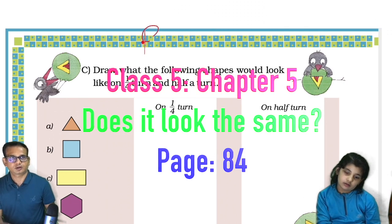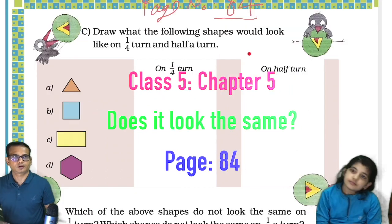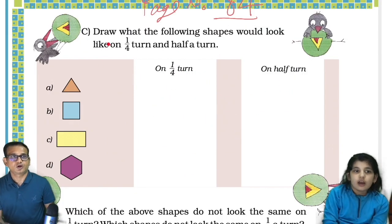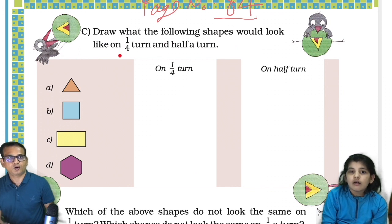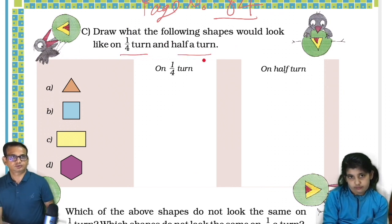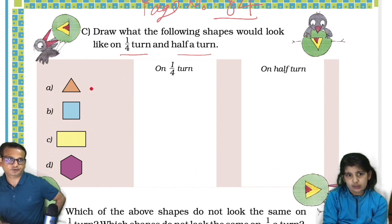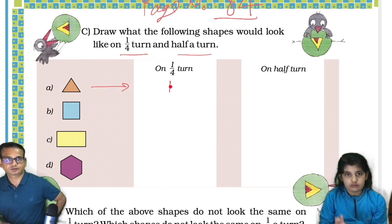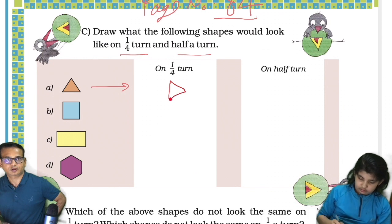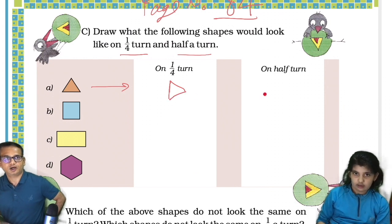Page number 84. Draw what the following shapes would look like on a quarter turn and half a turn. Okay, this one — quarter turn will look like this, and on half a turn it will look like this.